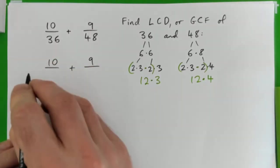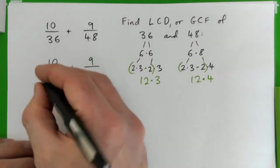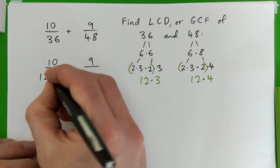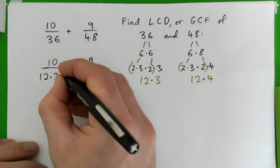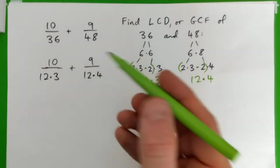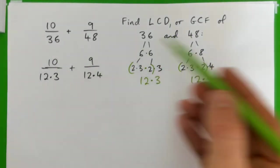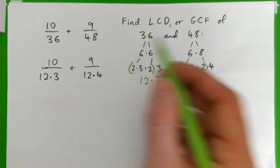But in any case, this is a longer way of figuring it out. So we've got 12 times 3 here and 12 times 4 here. So we have factorized the bottoms. We have found a greatest common factor of 36 and 48.